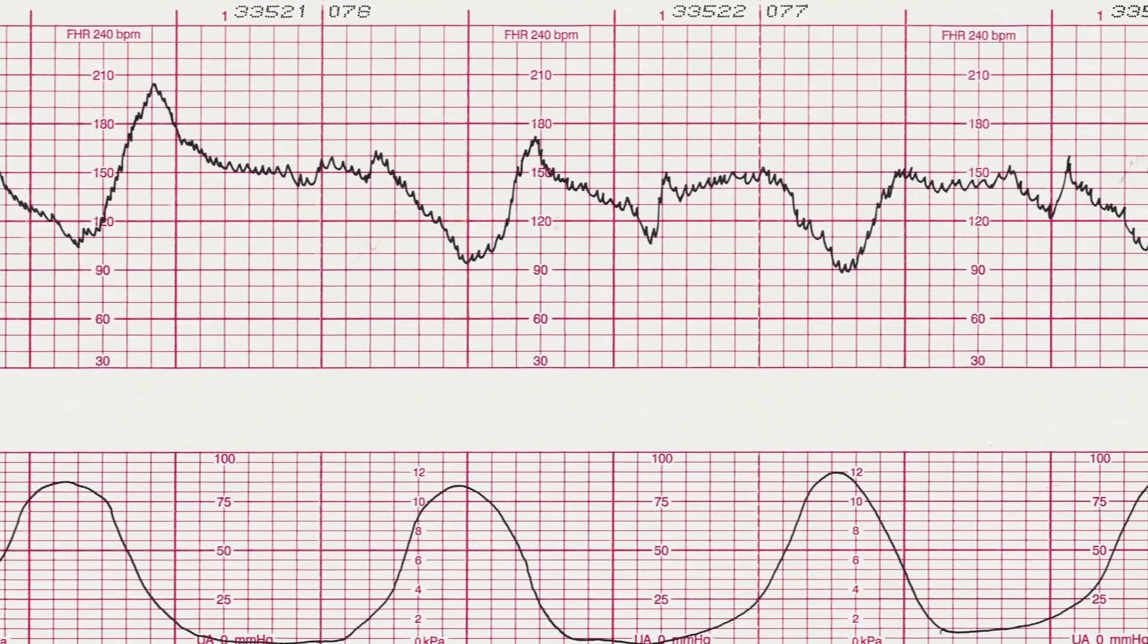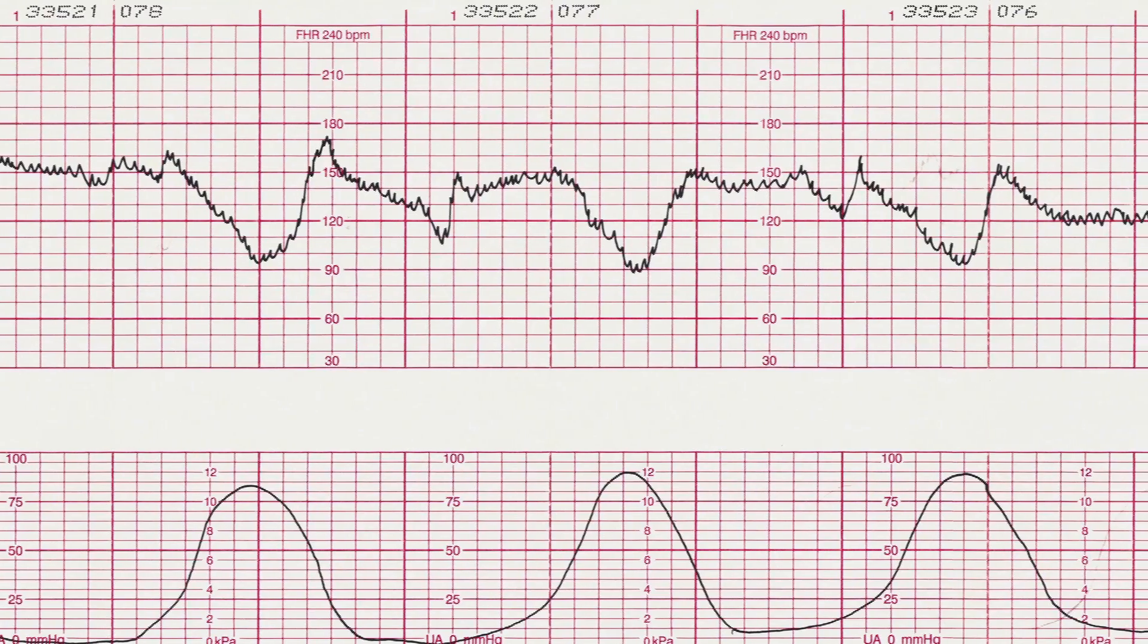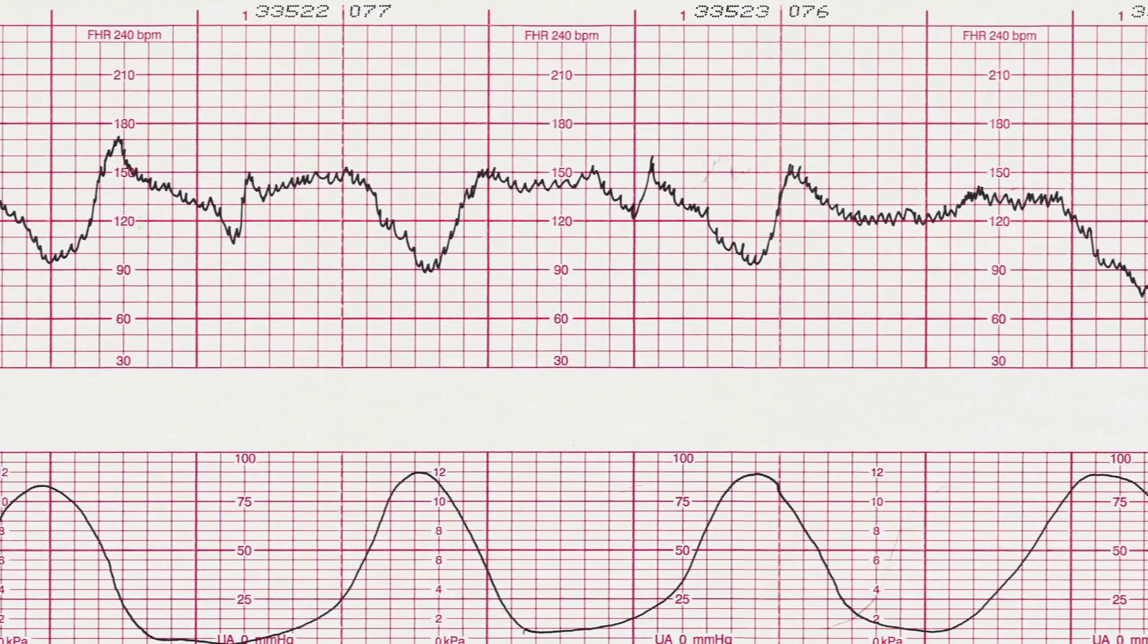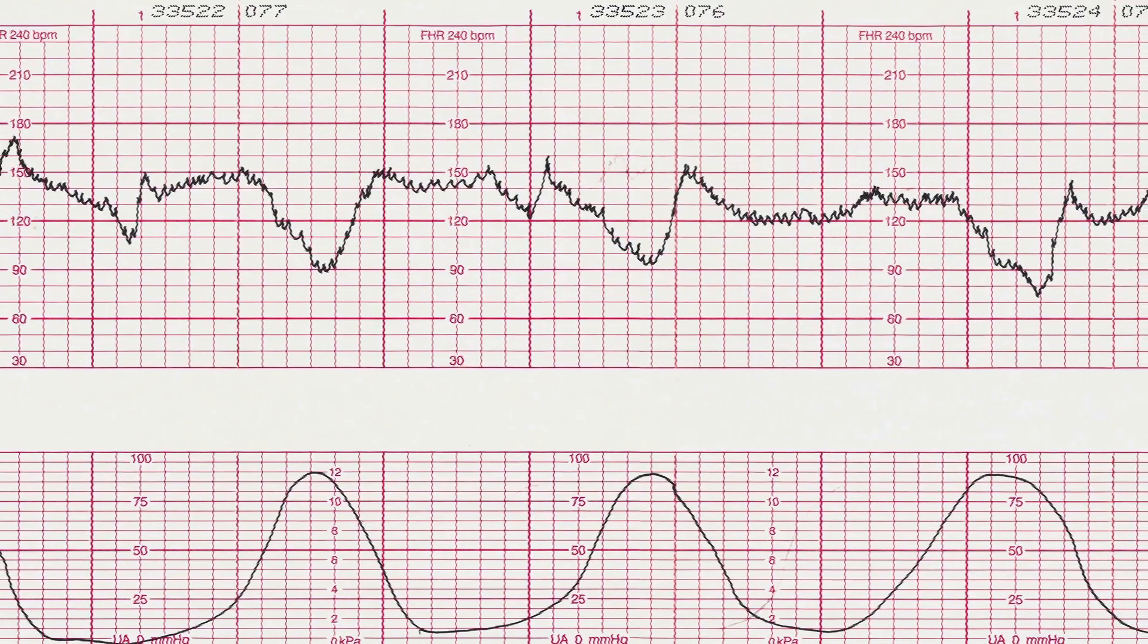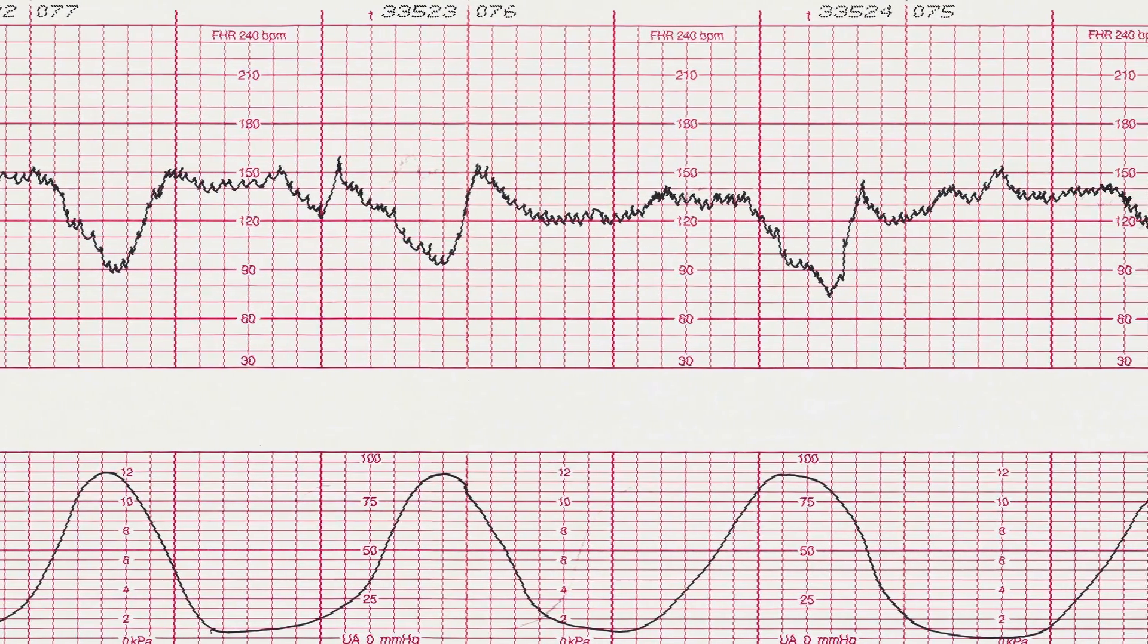First of all, we have variable decelerations, and variable decelerations are caused by cord compression. The cord can be compressed by the baby grabbing onto it, or the umbilical cord could be in between the baby's body and the uterus, and so the maternal position can make a difference with that.